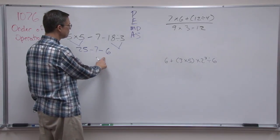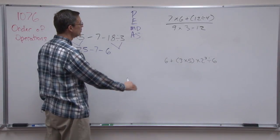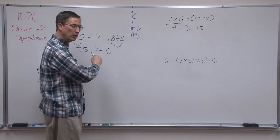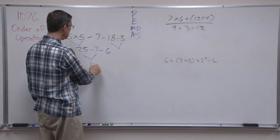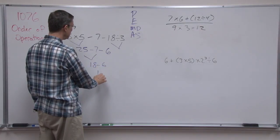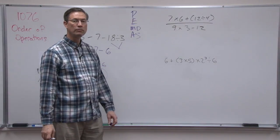Now I have only subtraction, so I can do my very last step, but I go in order from left to right. 25 minus 7 is 18. 18 minus 6 is 12.